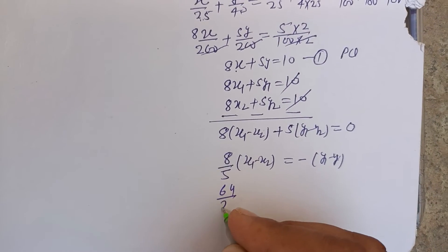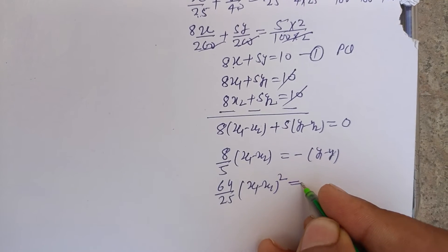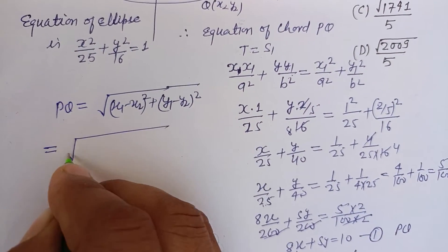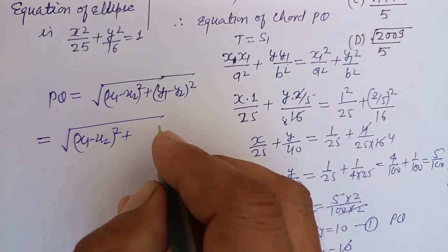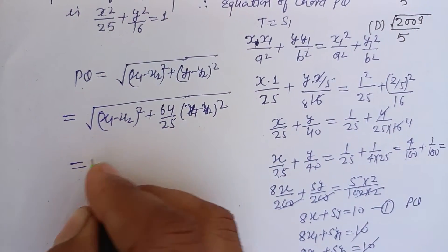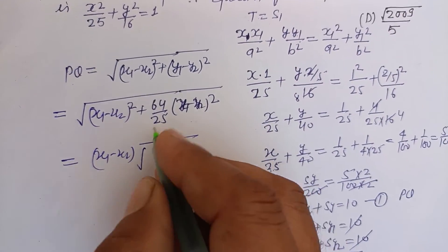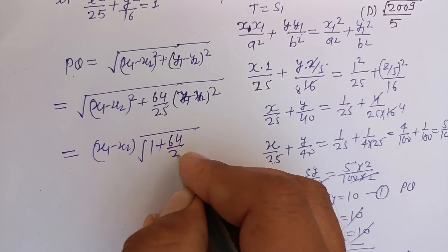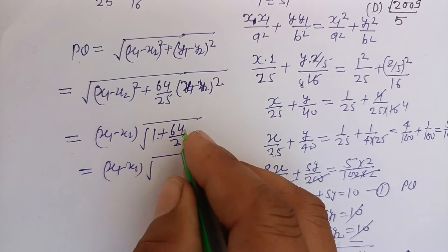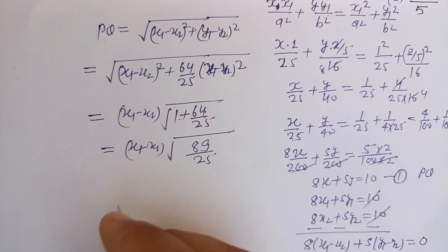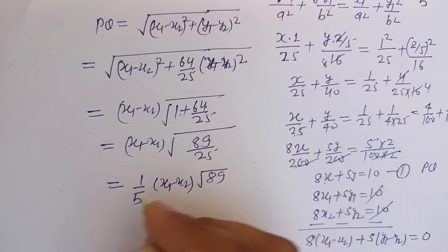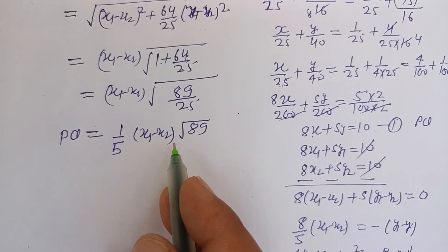Squaring both sides and substituting (y₁−y₂)² = (64/25)(x₁−x₂)² into the distance formula: PQ = √[(x₁−x₂)²(1 + 64/25)] = √[(x₁−x₂)²·(89/25)] = (1/5)(x₁−x₂)√89.